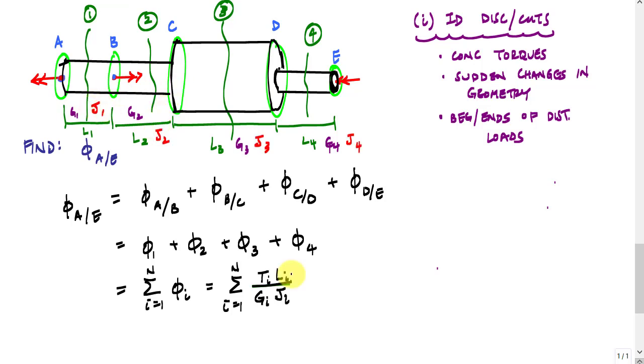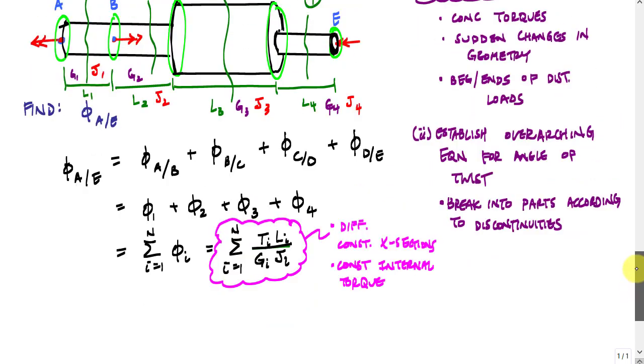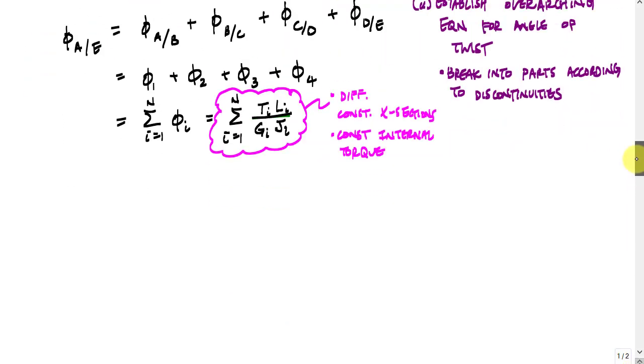And that, in a nutshell, is how I would solve for the angle of twist. What we did here was we established kind of this overall equation based on discontinuities. This is the relationship we would use when we have different constant cross sections and constant internal torque. So now we'll look at the other case. I'll just call that case two.